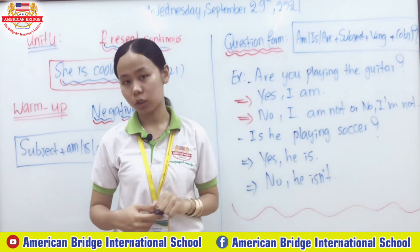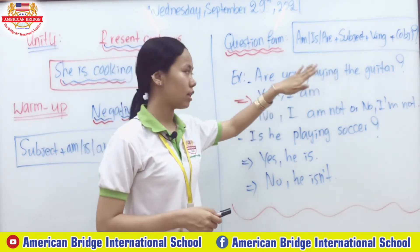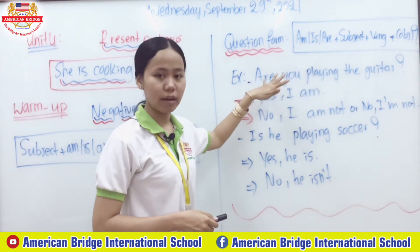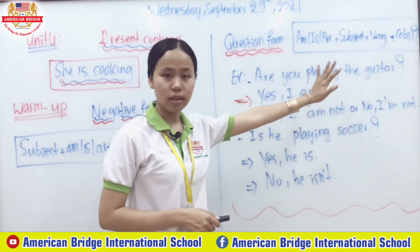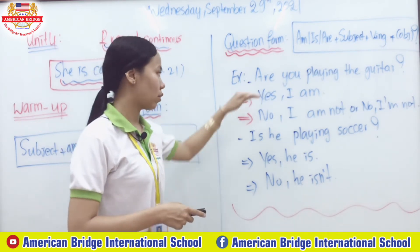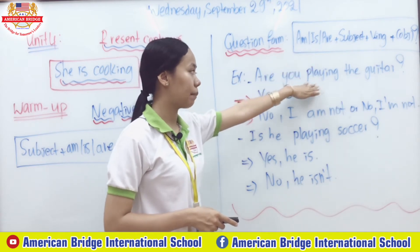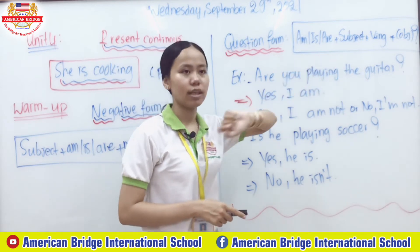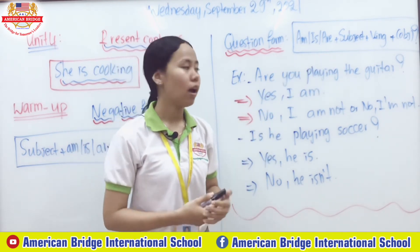Then you add the object and a question mark. For example: 'Are you playing the guitar?' You cannot write 'You are playing the guitar?' — no. You need to put am/is/are first, in front of the subject, then subject + verb-ing + object + question mark. Here 'are' is the verb to be, 'you' is the subject, and 'playing' is the verb-ing form — it comes from the verb 'play,' and you add -ing to get 'playing.'